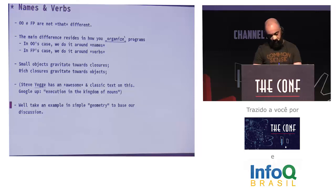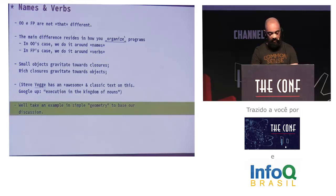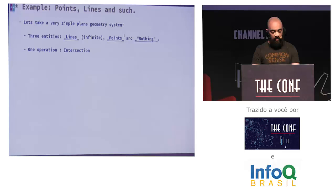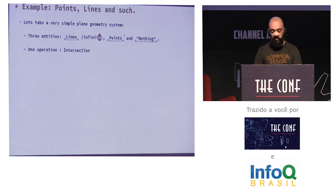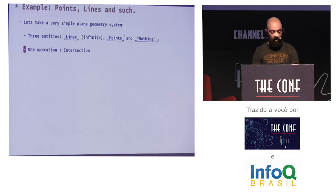To prove my point, we'll take an example of a simple geometric system. Our plane geometry system has three entities: lines — infinite lines — points in space, and nothing — the empty set. And we have one operation: intersection. We want to be able to intersect lines, intersect points, intersect nothing.